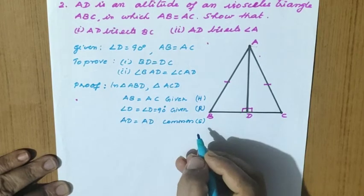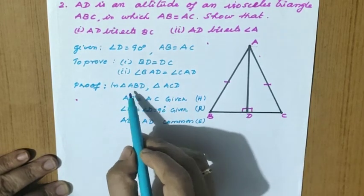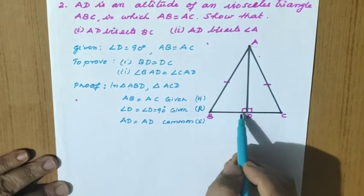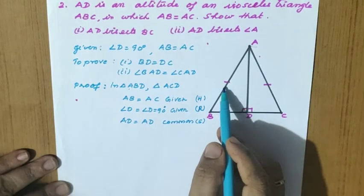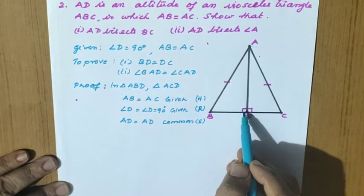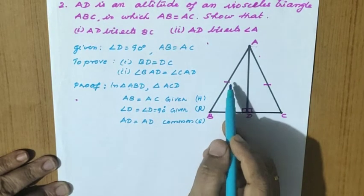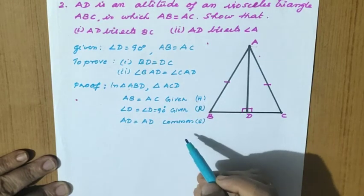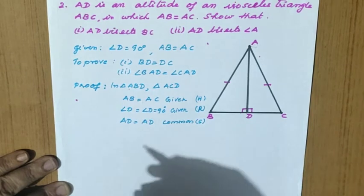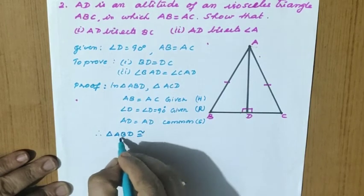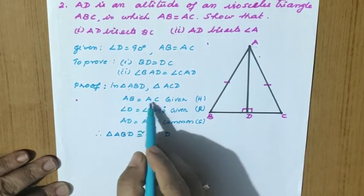When taking the sides equal, we consider triangle ABD first. Angle D is 90, AB is the hypotenuse — AB is given as an equal side. Now one more side is required, that is AD equal to AD, common. Therefore triangle ABD is congruent to triangle ACD.